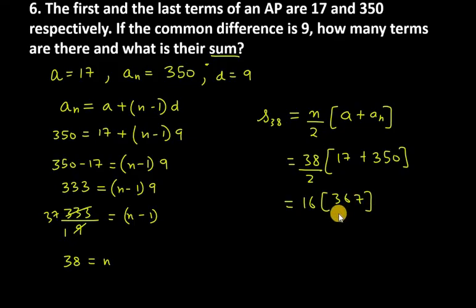Wait, this is not 16, it is 19. 38 over 2 is 19. So 19 times 367 is 6973. This is your answer for question number 6.